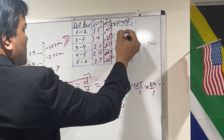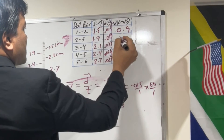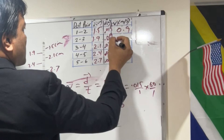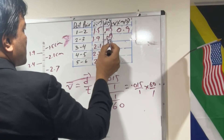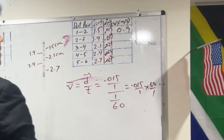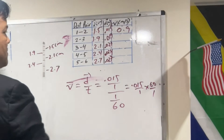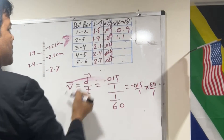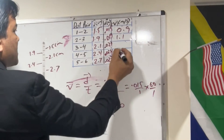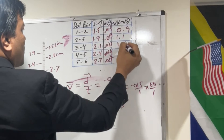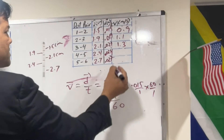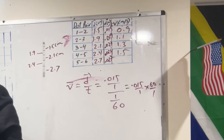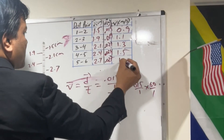Multiplying each displacement by 60 to get velocity: 0.015 × 60 = 0.9 m/s; 0.019 × 60 = 1.1 m/s; 0.021 × 60 = 1.3 m/s; 0.024 × 60 = 1.5 m/s; and 0.027 × 60 = 1.6 m/s.